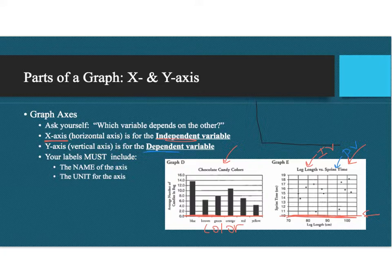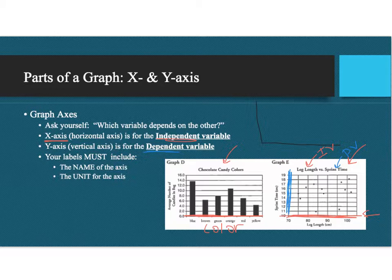For graph D, we said that the number of candies depends on the color, so the number of candies is on the Y axis. So your Y axis is for your dependent variable.